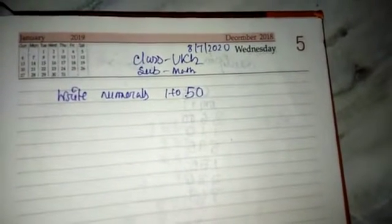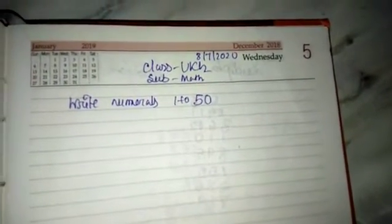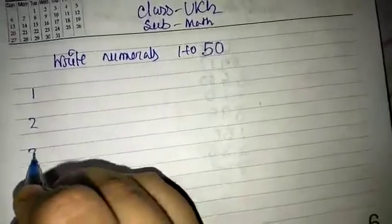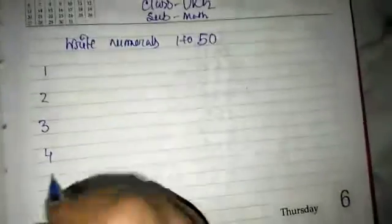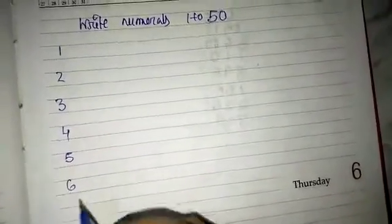Write numerals 1 to 50. Write 1, 2, 3, 4, 5, 6, 7, 8, 9, 10.